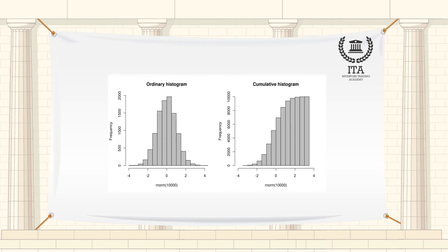Histograms give a rough sense of the density of the data and are often used for density estimation, estimating the probability density function of the underlying variable. The total area of a histogram used for probability density is always normalized to 1.